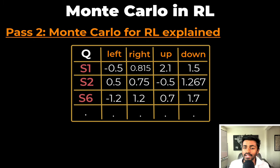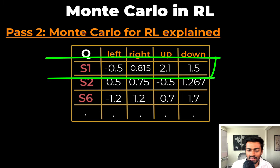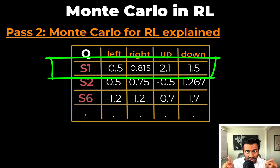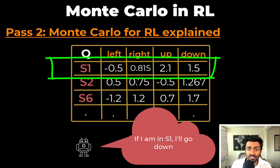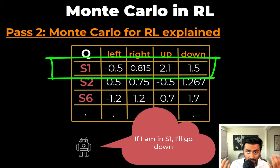Once we have these Q-values, we can understand Frank's methodology and how it decides to take actions. For example, when Frank is in state S1, we look at the highest Q-value — here it's 1.5, which corresponds to going down. So the greedy action Frank will take in state S1 is to go down. Now that we know Frank's Q-table, we know how Frank behaves and thus we know Frank's current policy.